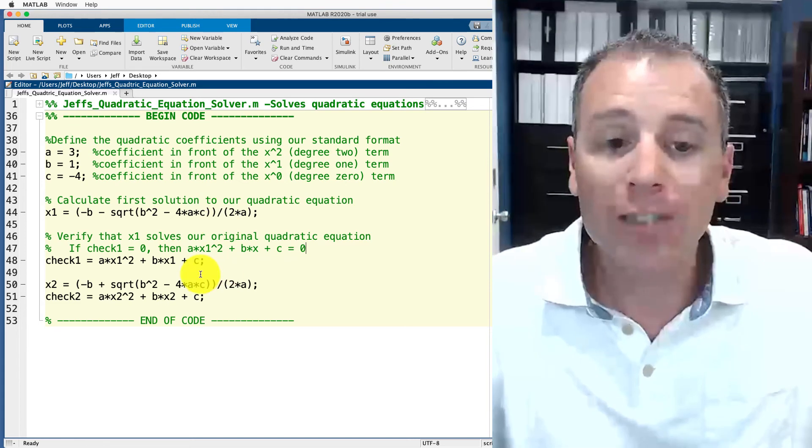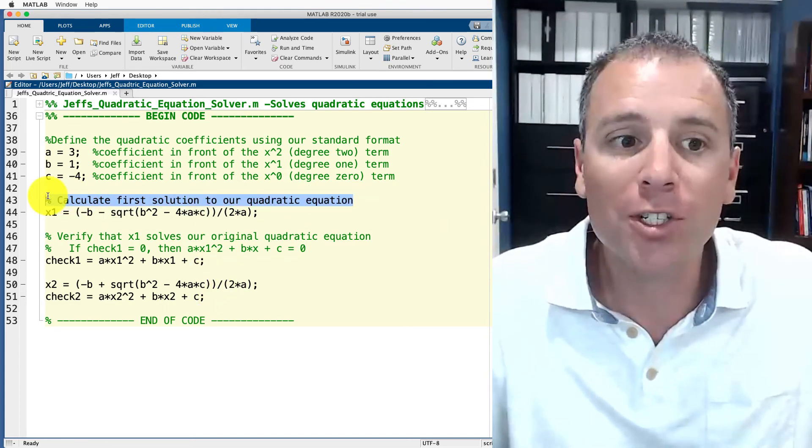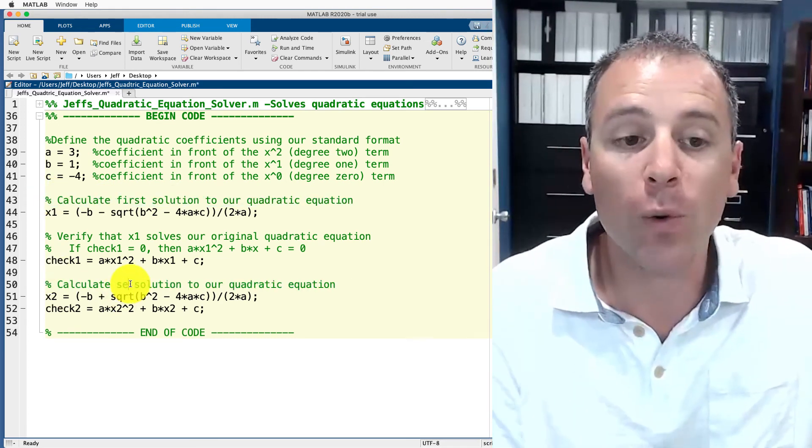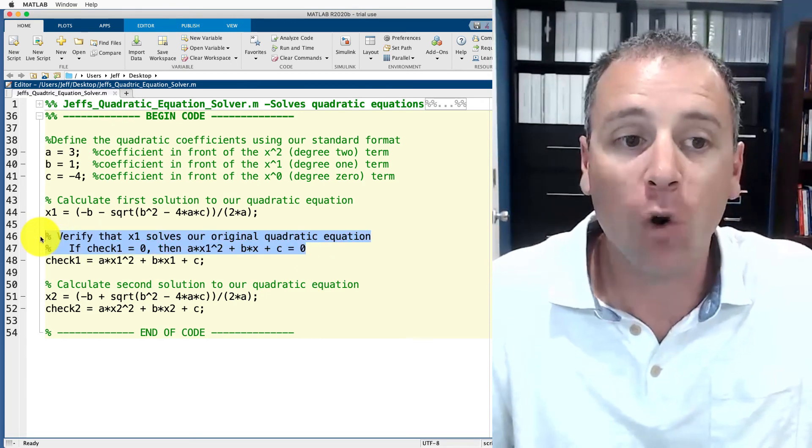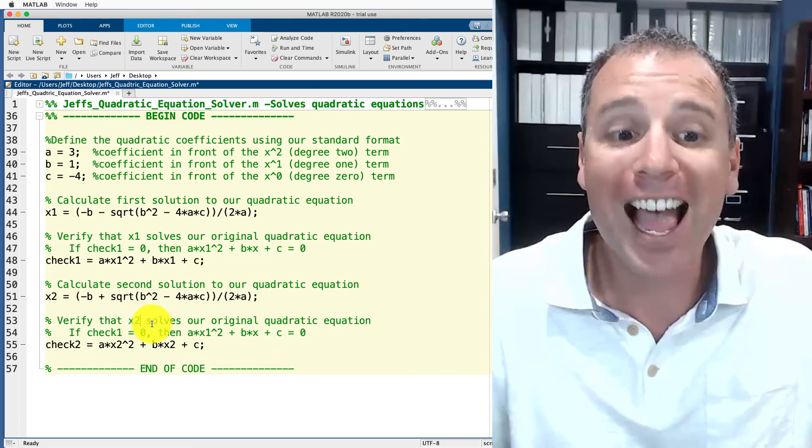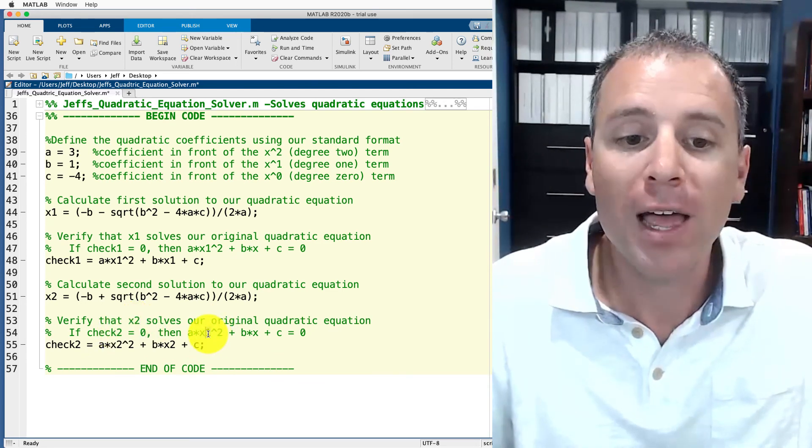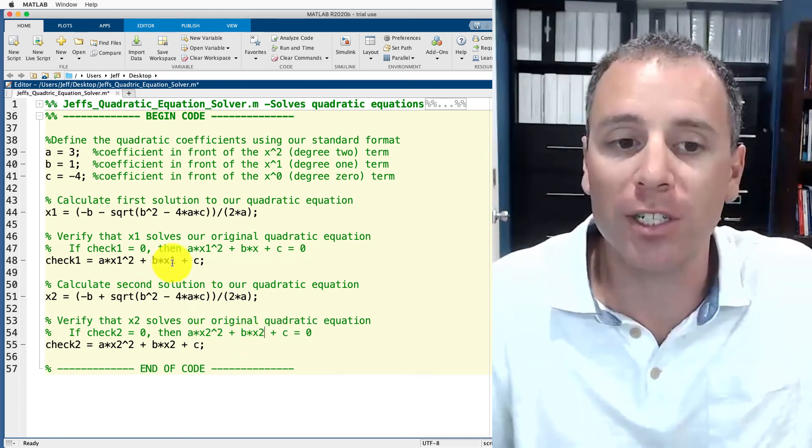Now that we've documented those two lines of code, we're going to go on to the next few. I'm all about reusing code. So in this situation, let's go ahead and copy and paste. This is now what we call the second solution to our quadratic equation. And then of course, the line check two is designed to verify that x2 solves our original quadratic equation. If check two is zero, then ax2 squared plus bx2 plus c is equal to zero.